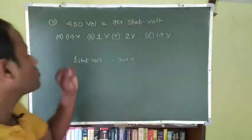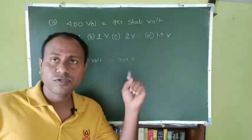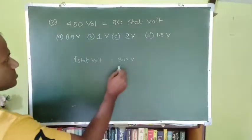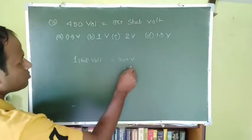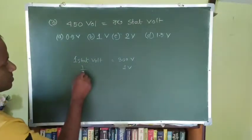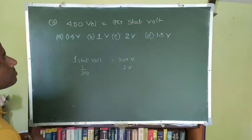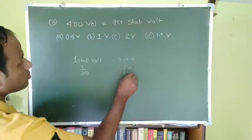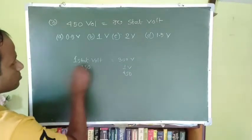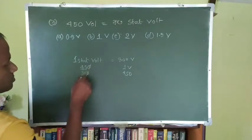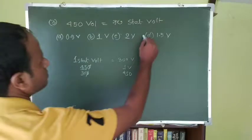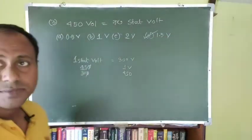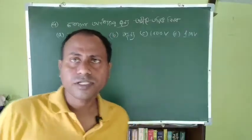The next question: if you have 400 volts, what is it in stat volts? 1 stat volt equals 300 volts. So 1 volt equals 1/300 stat volts. For 400 volts, dividing by 300 gives approximately 1.5 stat volts. So the answer is 1.5 stat volts.